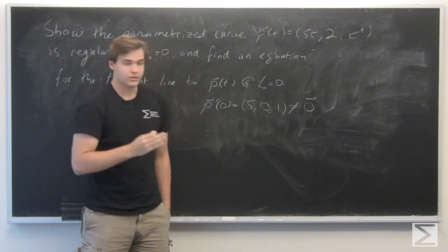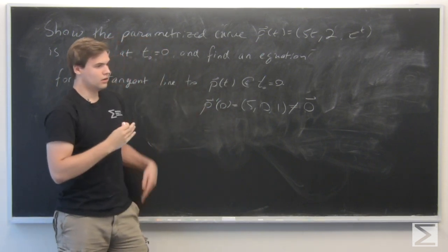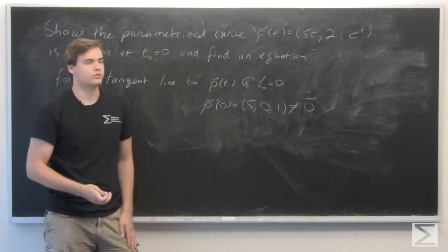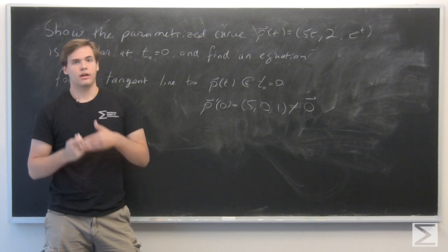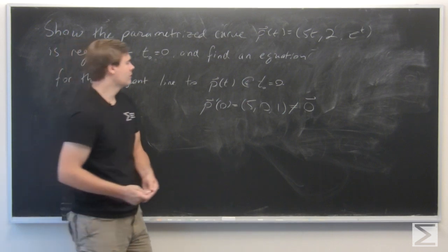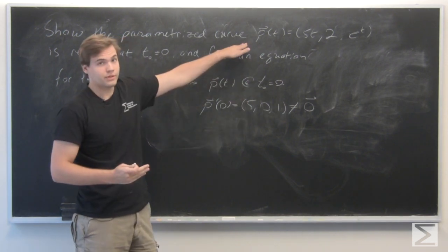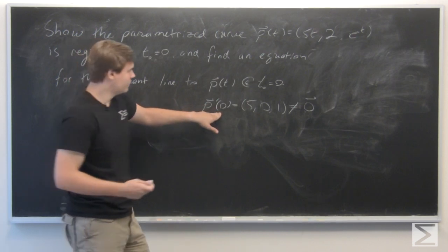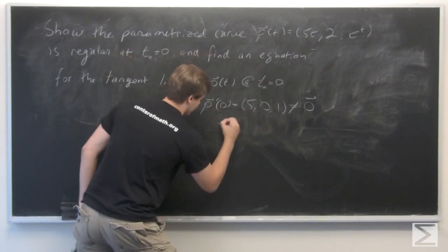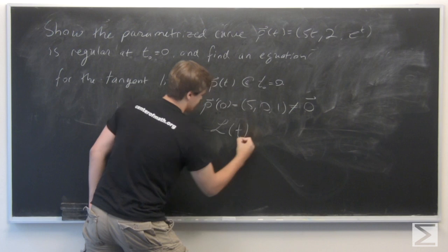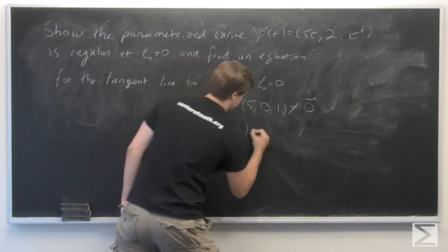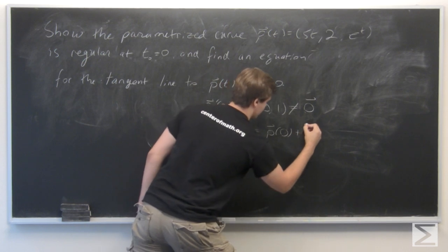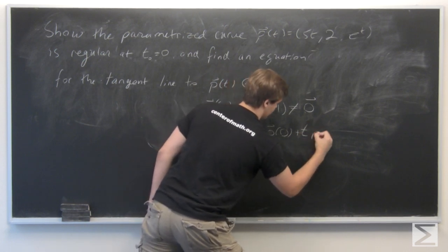Now the tangent line: recall that the way we parameterize a line in n dimensions, we need a vector parallel to the line and a point on the line. So p of 0 is definitely going to be on that line, and p prime of 0 is going to be the tangent to that line. The line is going to be given by p of 0 plus t times p prime of 0.